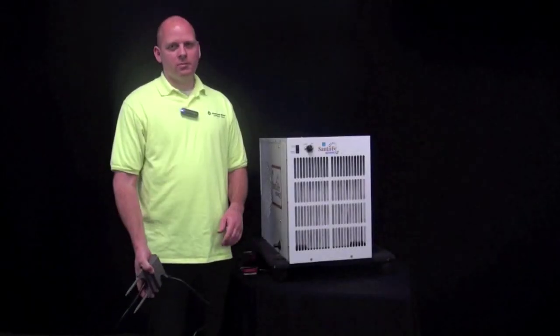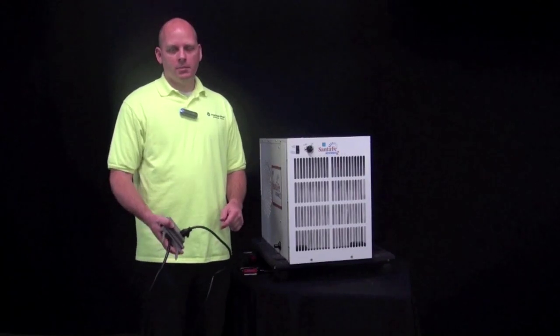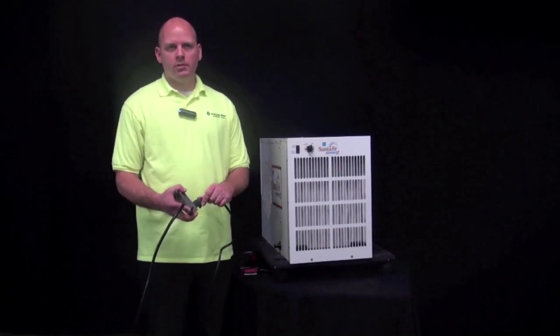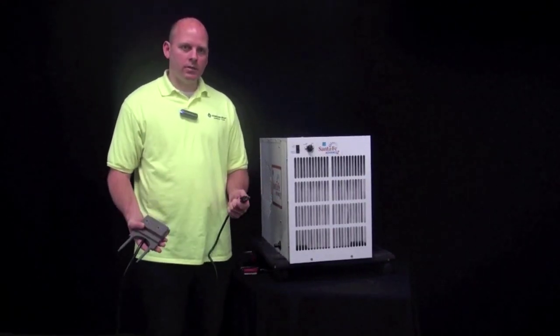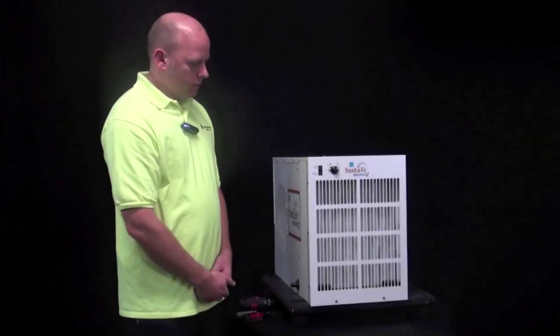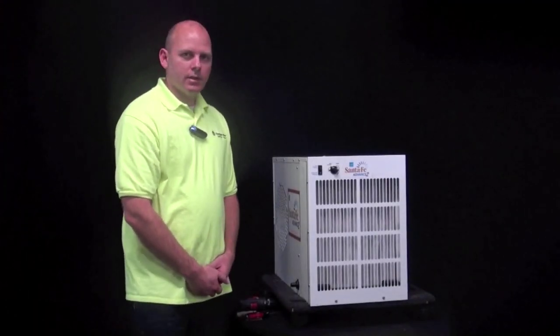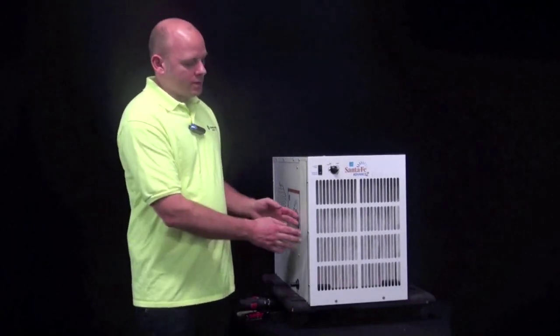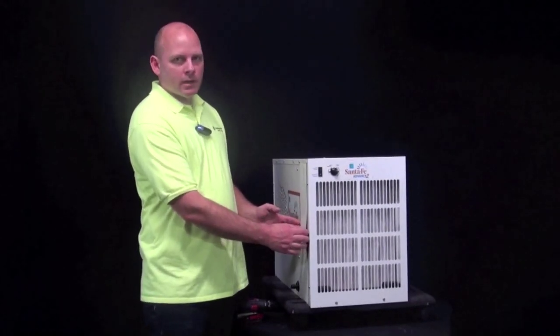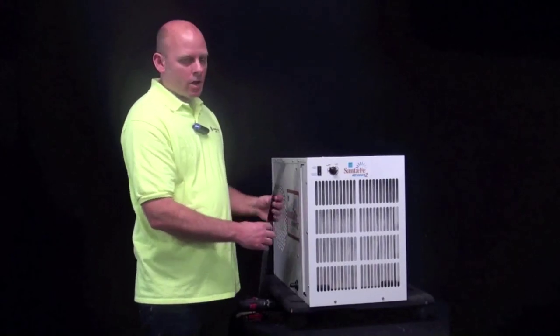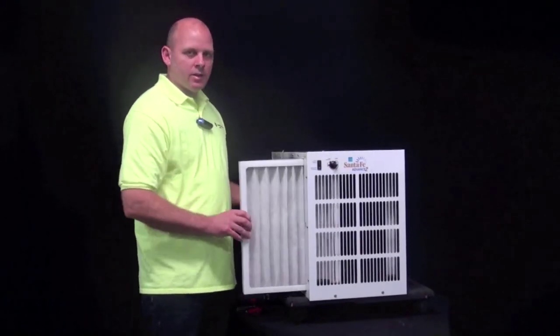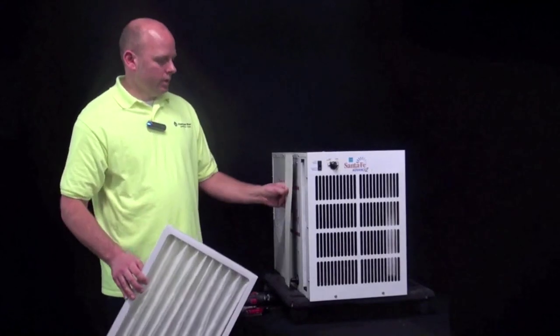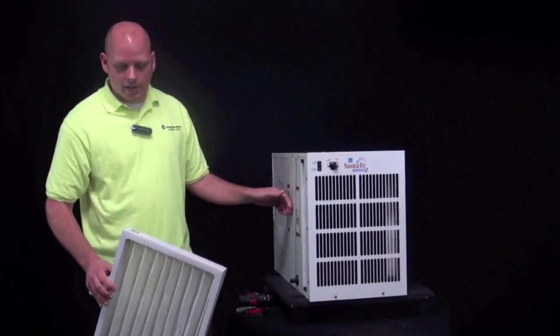Before you start the repair, to be safe you want to make sure the unit is unplugged from the wall outlet. To replace the dehumidistat, you're going to want to take the filter door magnet off one of the sides so you can slide the air filter out, and then just go ahead and set that to the side.